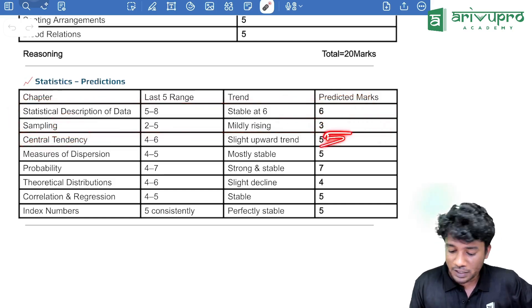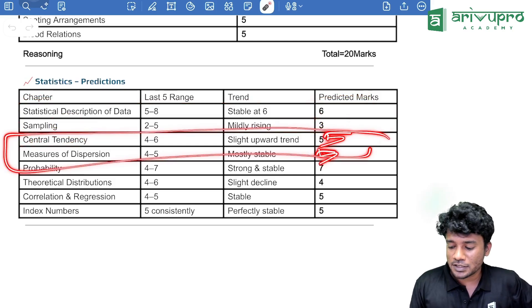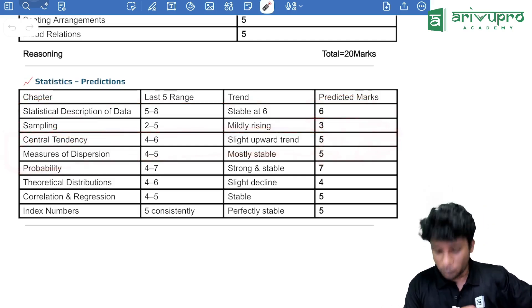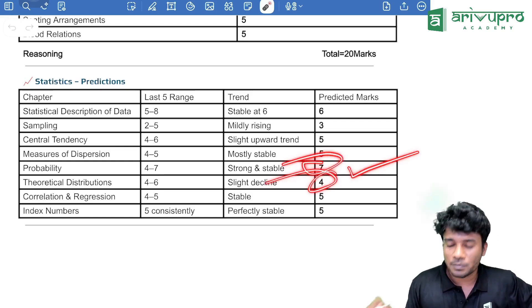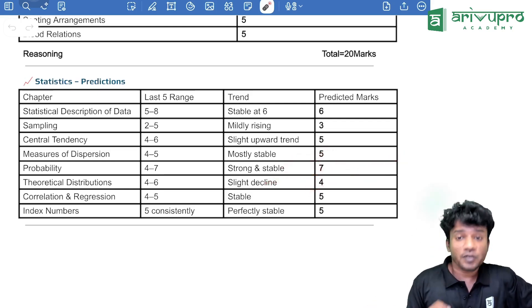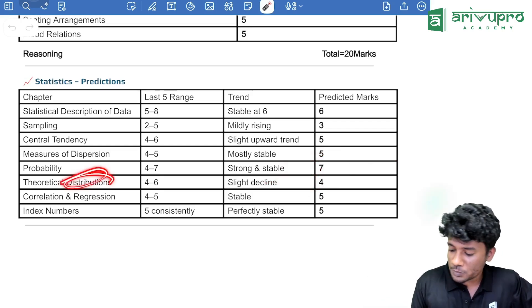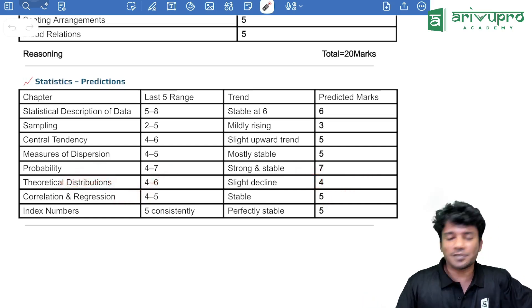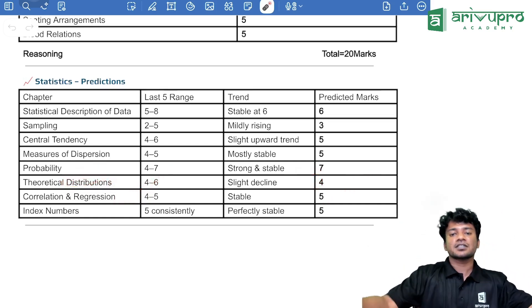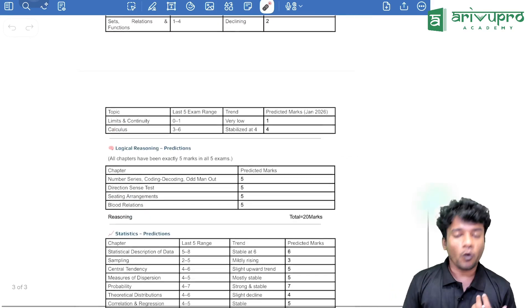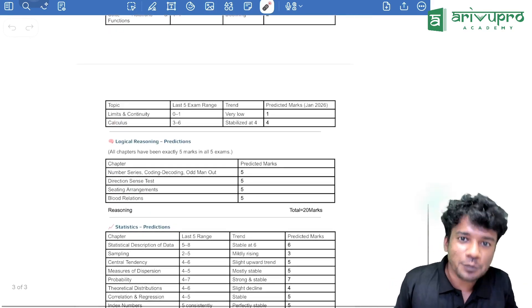Then, central tendency, we are expecting 5. And dispersion 5. That means, 10 marks we are expecting from chapter 14. Then, coming to the probability part, 7. And theoretical distribution part, we are expecting 7 and 4 each. That means, theoretical distribution 4 marks. Then, correlation, regression, and index number, the usual one, 5, 5, 5 each.